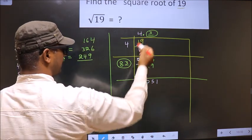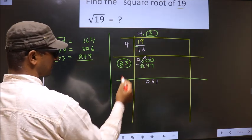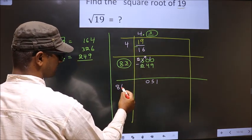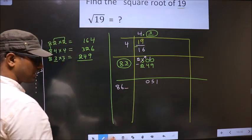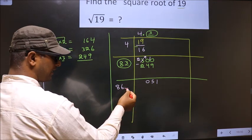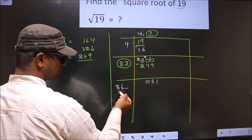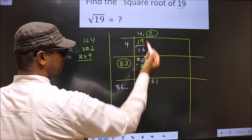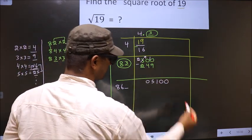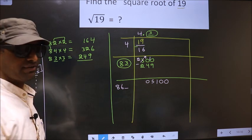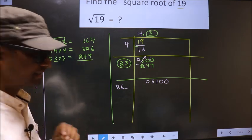Now we should add these two numbers and write: 83 plus 3 is 86. We need to write a number here, but this number will be smaller than the current dividend. We already have a decimal, so you directly take two zeros.